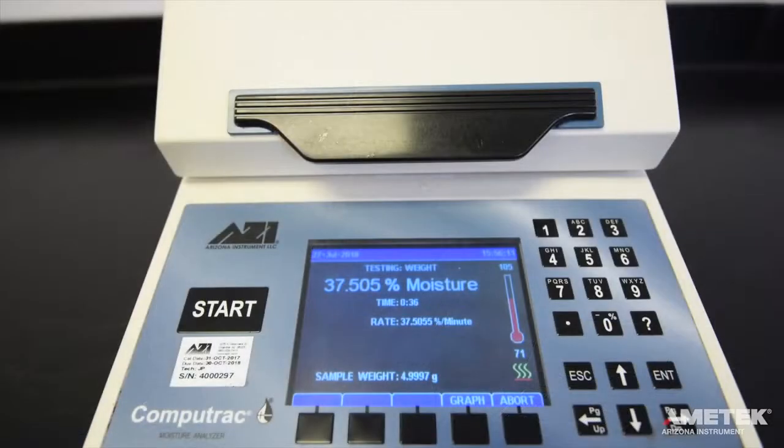The three gram weight that was removed represents 37.5% of the initial eight grams that the test started with. You'll notice the percent moisture value displayed on the screen is nearly that value, as is the percent rate of loss per minute. You will also note that the sample weight now reflects approximately five grams. The test will usually conclude in about a minute to a minute and a half.